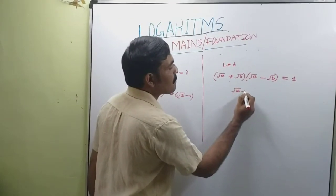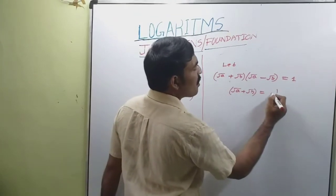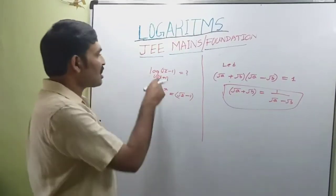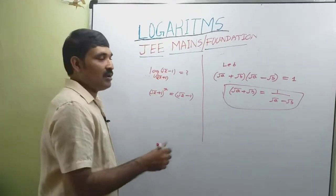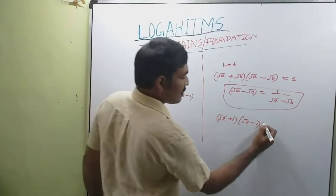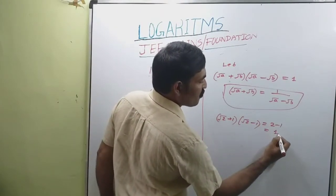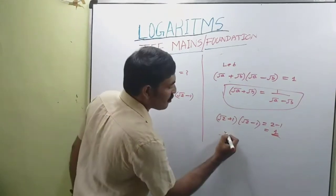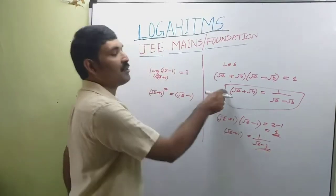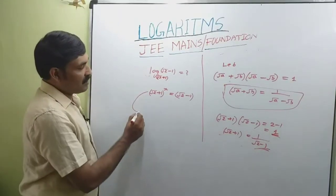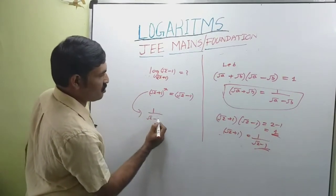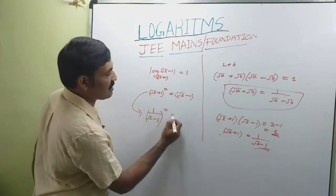Then we can write √a + √b = 1 / (√a - √b). Now consider √2 - 1 and √2 + 1: (√2 + 1)(√2 - 1) = 2 - 1 = 1. So we can write √2 + 1 = 1 / (√2 - 1). Using this identity, (1/(√2 - 1))^x = √2 - 1.